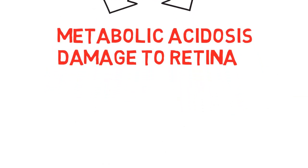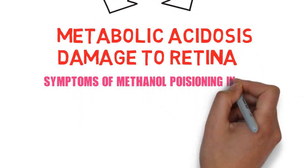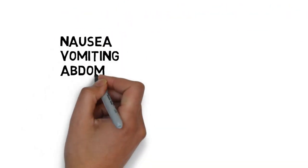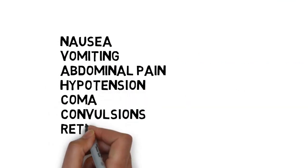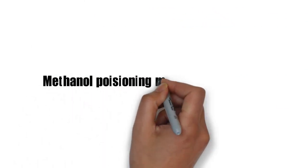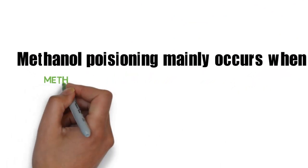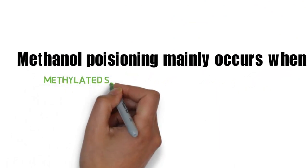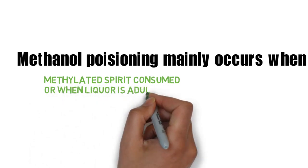Formic acid also causes damage to the retina. Symptoms of methanol poisoning include nausea, vomiting, abdominal pain, hypotension, coma, convulsions, retinal damage, and blindness. Methanol poisoning mainly occurs when methylated spirit is consumed or when liquor is adulterated with methanol.